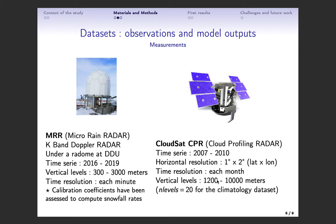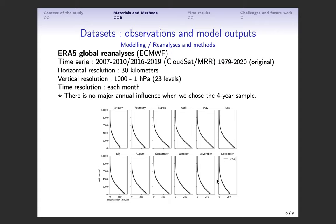Data coming from the CPR of CloudSat have been treated by Lemonnier et al. in 2019 to compute the first three-dimensional climatology over the whole Antarctic continent. In terms of modeling, we use the ERA5 reanalysis from the ECMWF. However, in its database, vertical profiles of snowfall rates are not archived, so we have to compute them from temperature, specific humidity, and snow water content.